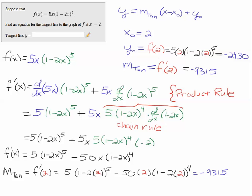The slope is minus 9315, the y naught is minus 2430, and the x naught is 2. And that is the solution to the problem.